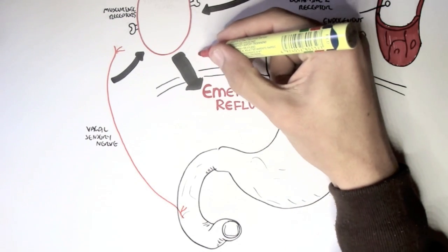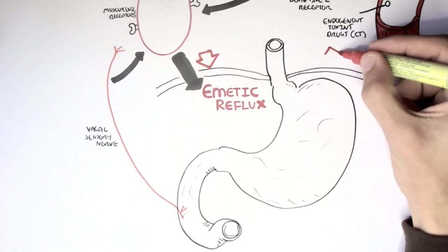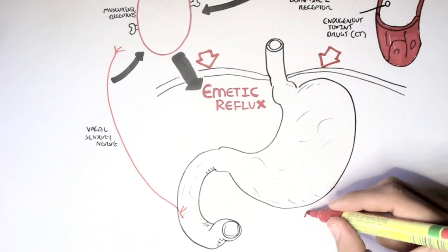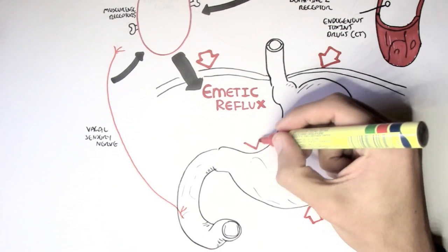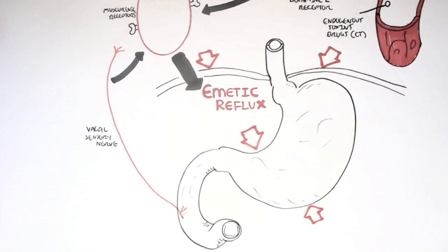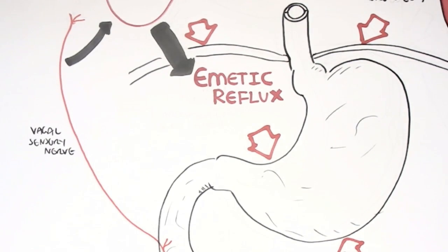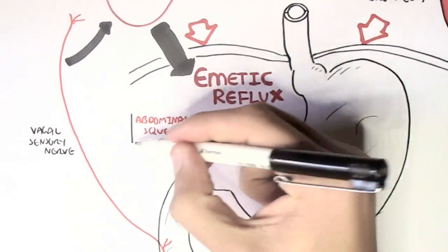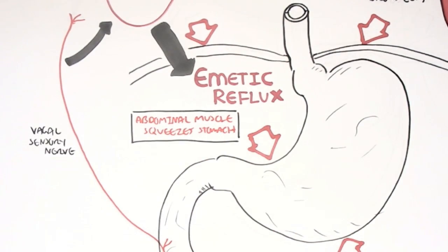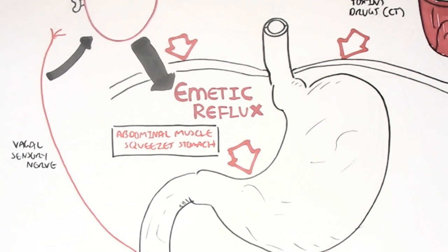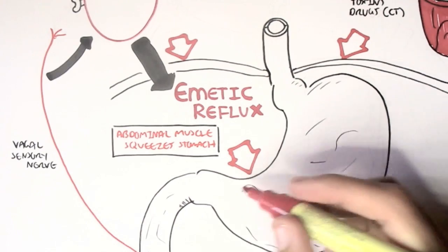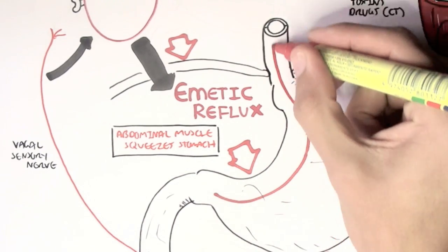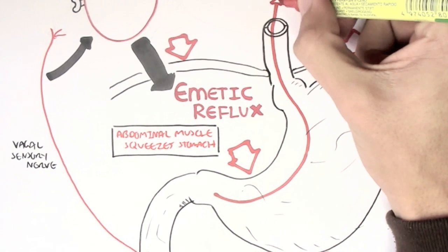So, the act of vomiting, as we know, is initiated from the brainstem, from the vomiting center. However, the physical act of vomiting from signals coming from the brainstem is due to the contraction of abdominal muscles, squeezing the duodenum and the stomach to cause the food to move upwards.